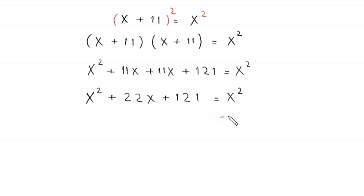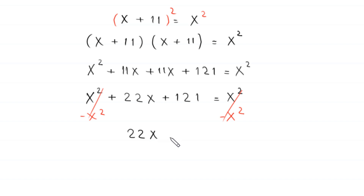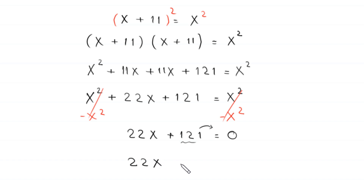We subtract x squared from both sides — both x squared terms get cancelled — and we are left with 22x plus 121 equals 0. Moving 121 to the right-hand side gives us 22x equals negative 121.